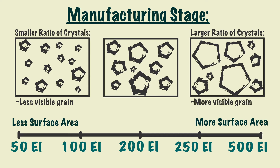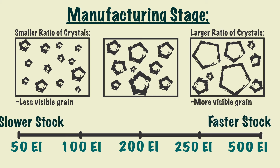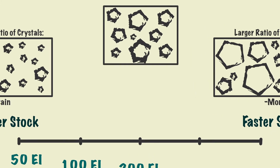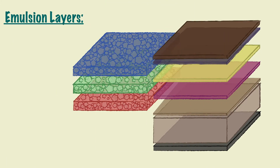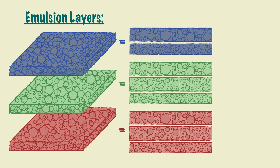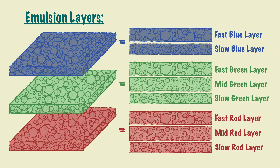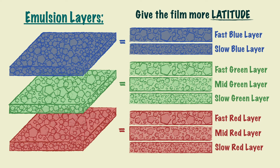The exposure index of film can also be referred to as the film's speed. The faster the stock, the higher the exposure index, and the slower the stock, the lower the exposure index. Emulsion layers are made of two or three layers themselves, each with different film speeds to capture all levels of light and give the film more latitude.